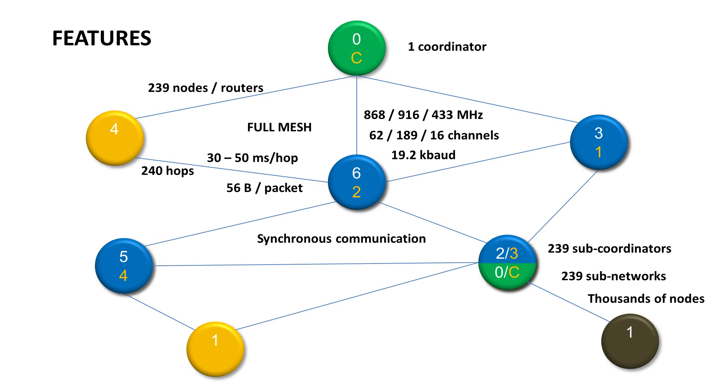Communication in the main network is synchronized, whereas sub-networks are usually used for asynchronous communication, such as alarm messages or commands from remote controllers.